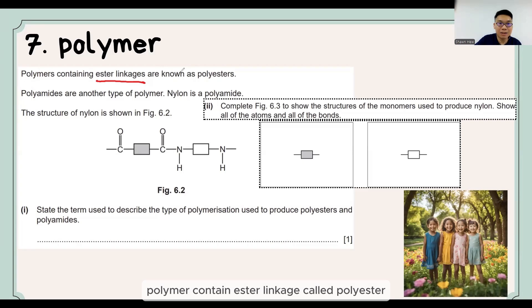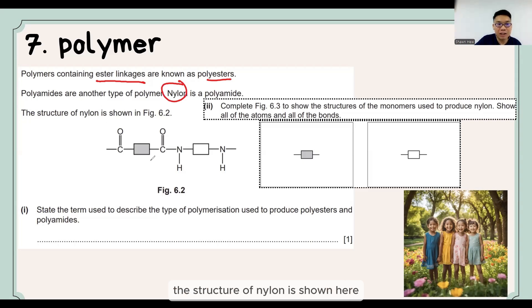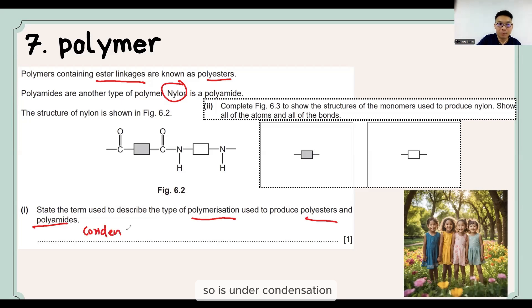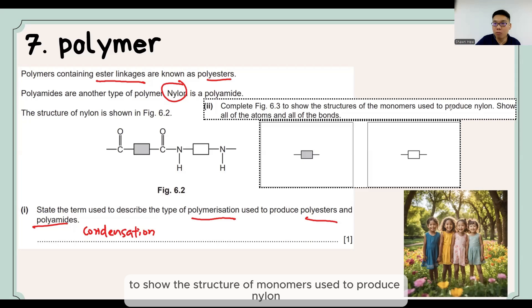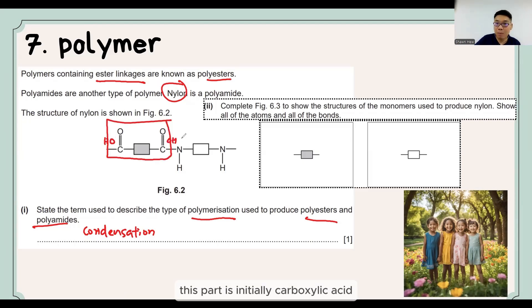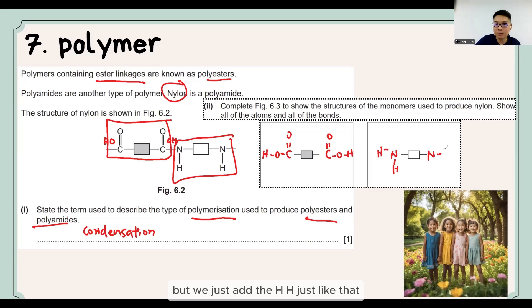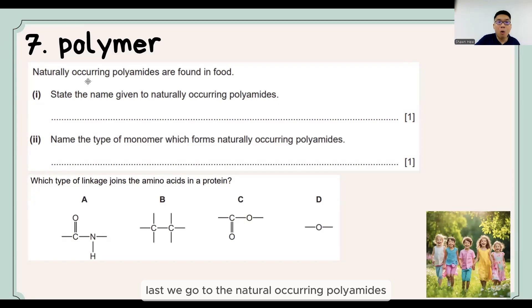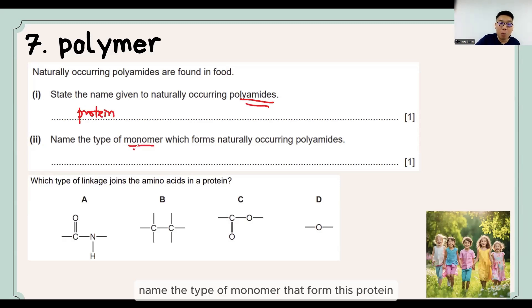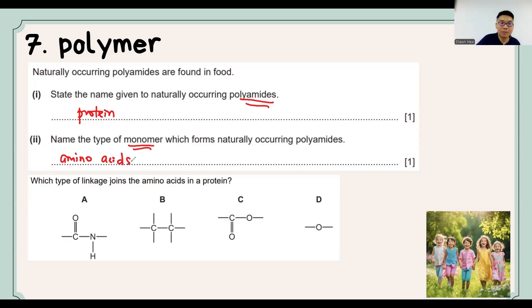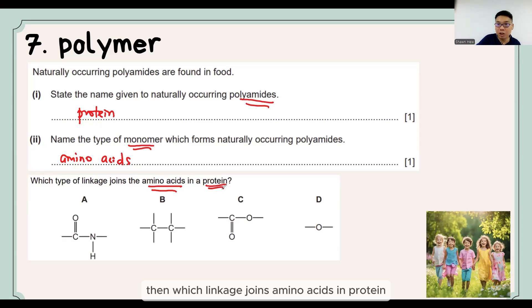Next question: a polymer contains ester linkage — this is called polyester. Polyamides are another type; nylon is one example. The type of polymerization used to produce polyester and polyamide is condensation polymerization. To complete the monomers used to produce nylon: the first part initially has a COOH group (carboxylic acid end), and the second part initially has NH2. The naturally occurring polyamide found in food is protein. The monomer that forms protein is amino acid. The linkage joining amino acids in protein is the amide bond.